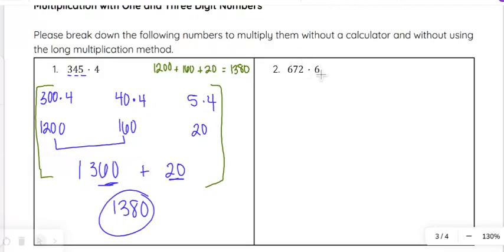On number 2, 672 times 6. Similar concepts, 6, 7, and 2. We'll look at the places. So 6 is in the 100. So 600 times 6. Then we'll do 70 times 6. Then we'll do 2 times 6.